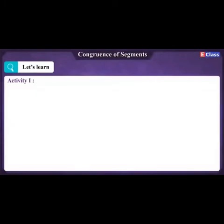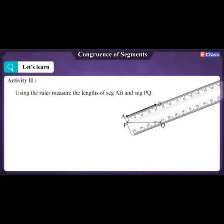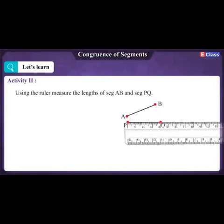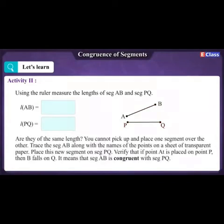Congruence of segments — let's learn. Activity 1: Take a rectangular paper and place two opposite sides one upon the other; they coincide exactly. Activity 2: Using the ruler, measure the length of segment AB and segment PQ. The length of AB is equal to the length of PQ. Are they of the same length?